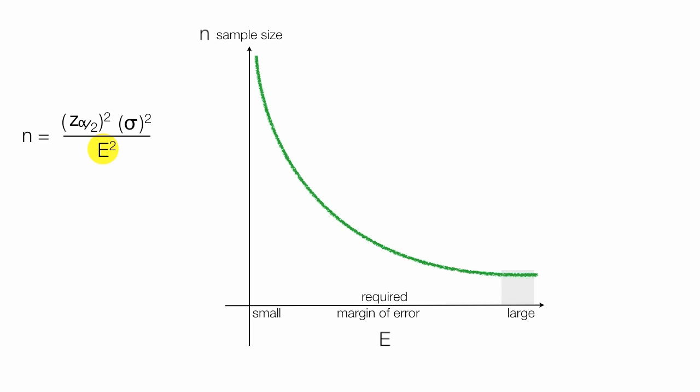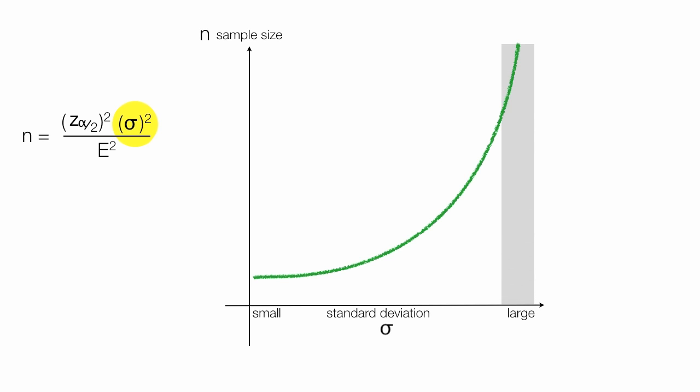I'm going to do the same thing, but this time I'm going to put standard deviation along the x-axis, or the horizontal axis. If I draw a graph, it looks something like this. If I have a small variation or small standard deviation, I require a small sample size. But if I have a lot of variation or a large standard deviation, I require a very large sample size.